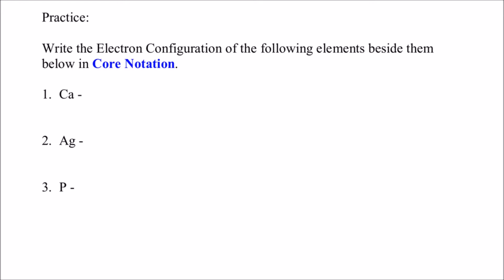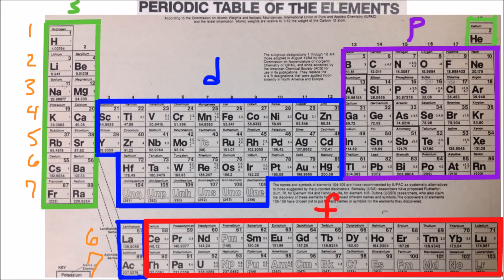We're trying to do the core notation for calcium. Let's write the electron configuration for calcium first. You do not always have to do this. I'm just doing it here to draw your attention to some things. So that's the electron configuration. Now we need to go find the noble gas in the row above calcium. Here's calcium. We move up one row to the third row, go all the way over, and argon is the noble gas in the row above calcium.